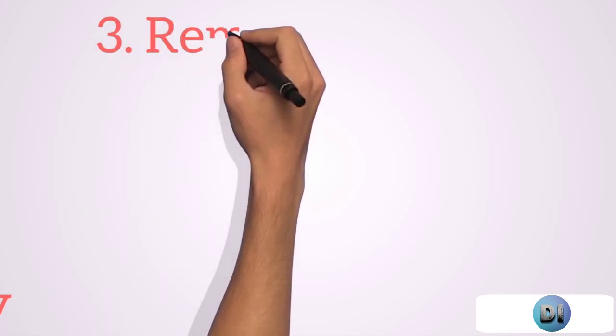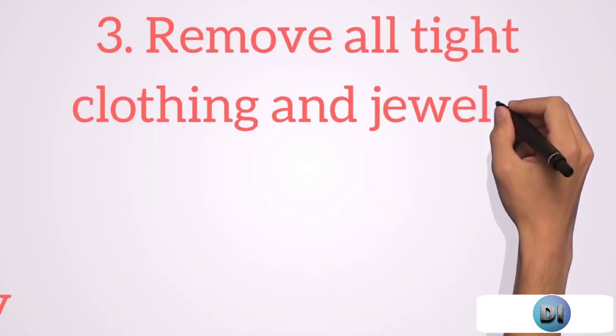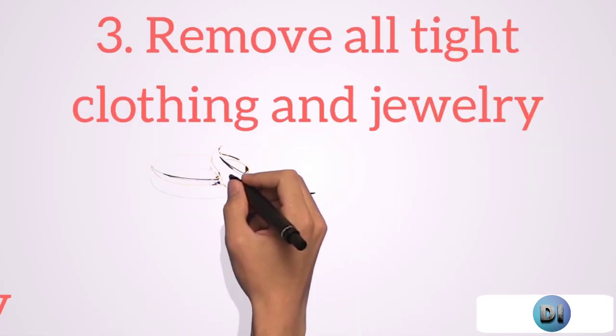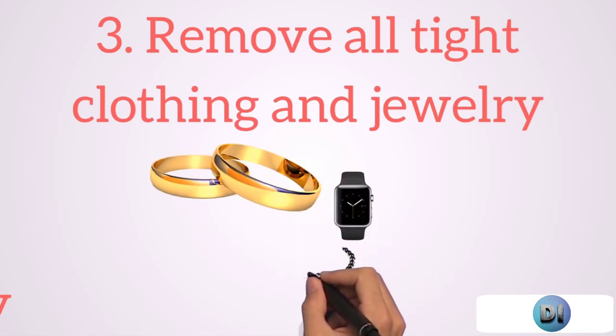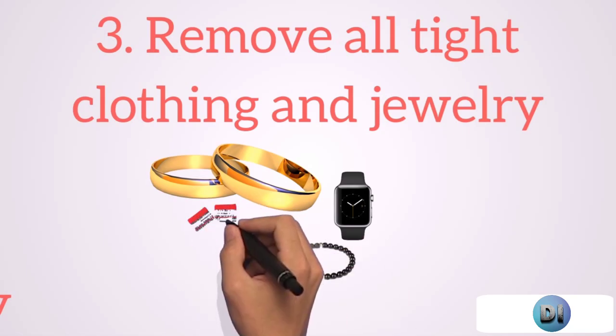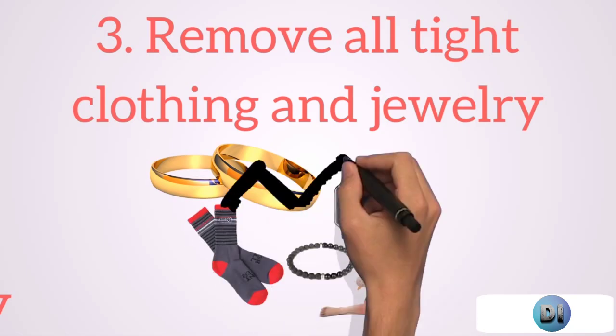Number 3: Remove all tight clothing and jewelry. Jewelries like rings, watches, and bracelets can become a tourniquet if your limb starts to swell, so it is necessary to remove them. Also, do not apply any rope or cloth tourniquet as these would worsen your odds of losing your life or limb.